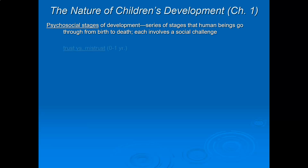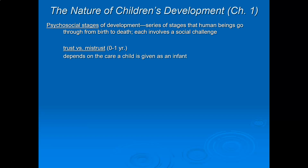The first psychosocial stage Erikson talked about was Trust versus Mistrust. As we'll see, each stage is always something versus something. The Trust versus Mistrust stage goes from birth to one year of age. Since these stages involve social development, who is in our social world during the first year? Primarily our parents. Erikson says the relationship we have with our parents and the care they give us in that first year determines whether we develop a sense of trust or mistrust.